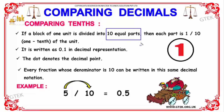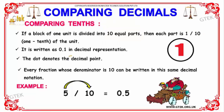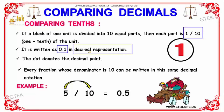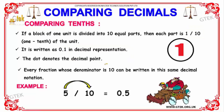then each part is denoted as 1/10th of the unit. That can be written as 0.1 in decimal representation. So 1/10 is represented as 0.1. The dot here denotes the decimal point.